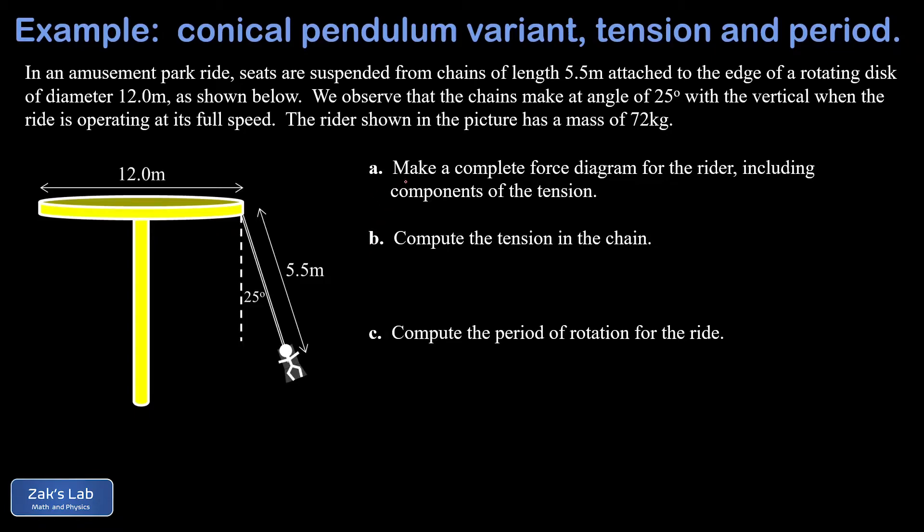In part A, we're asked to make a complete force diagram for the rider including the components of the tension. The two external forces on this rider are the tension in the chain, which we'll call T, and then the force of gravity pointing downward, which we'll call mg.